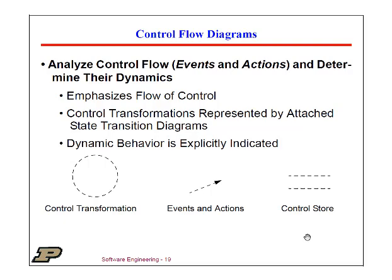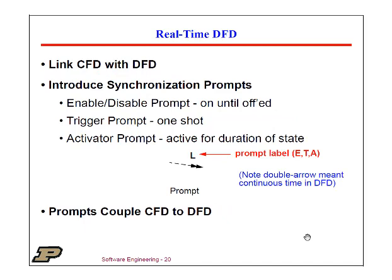How does this work in the case of a control flow diagram? The control flow diagram doesn't have much value unless we link it with a data flow diagram, because that's really what's telling us how the data is moving. What we call this is a real-time data flow diagram — when you have a control flow diagram linked with a data flow diagram. We need what are called synchronization prompts. There are three types, represented by a double-headed dashed arrow, formally part of the control flow diagram, yet showing the explicit links to the data flow component.